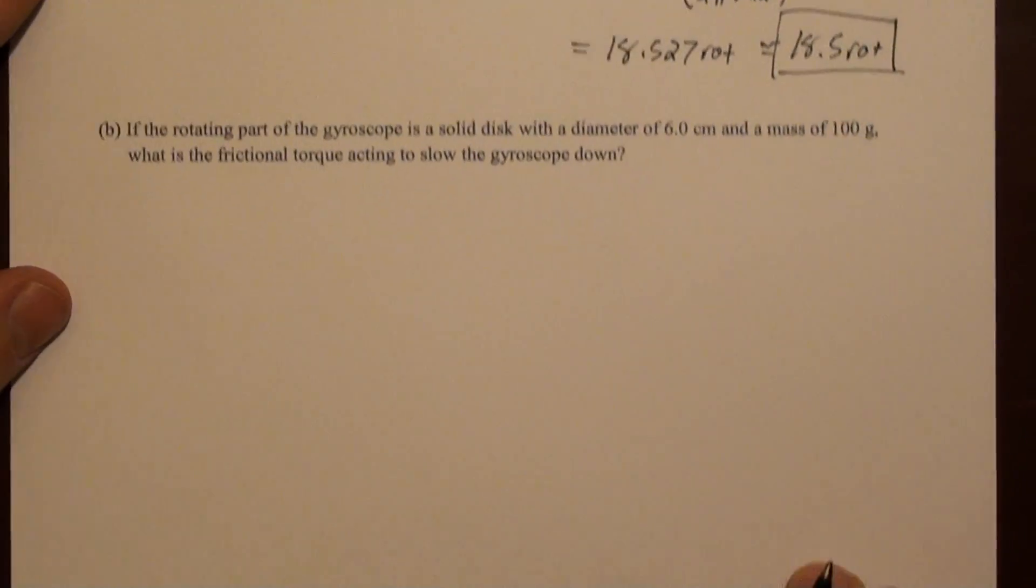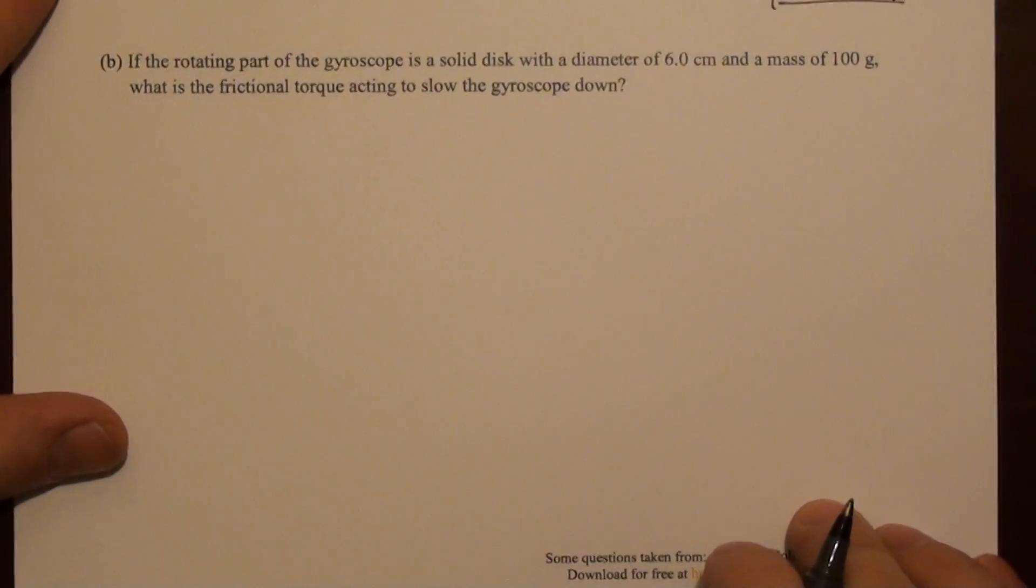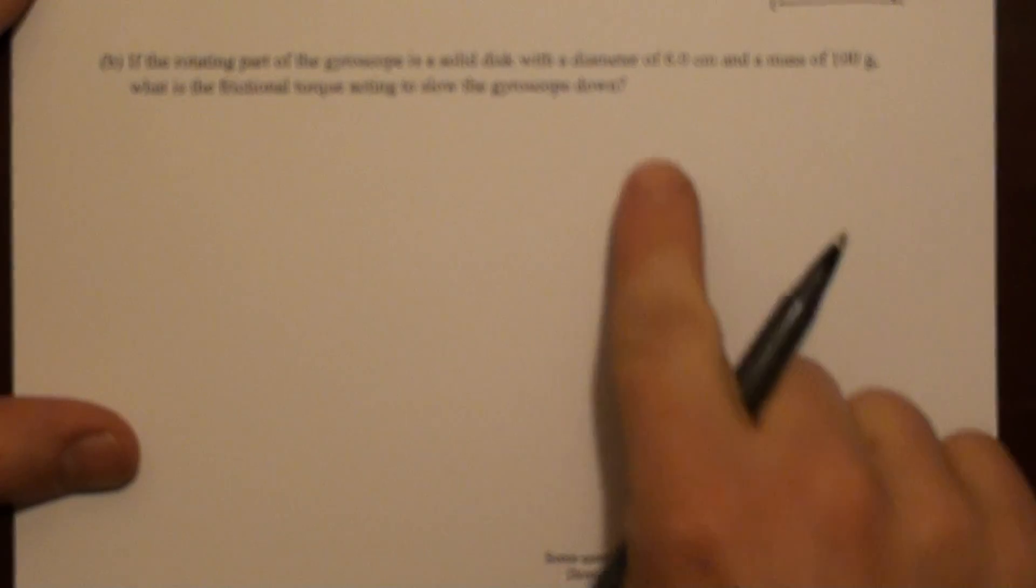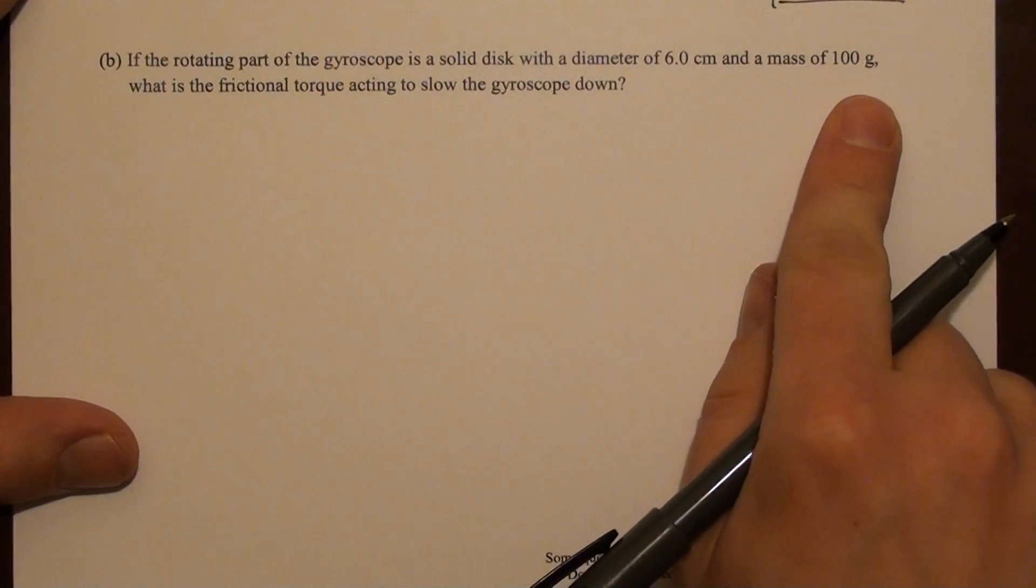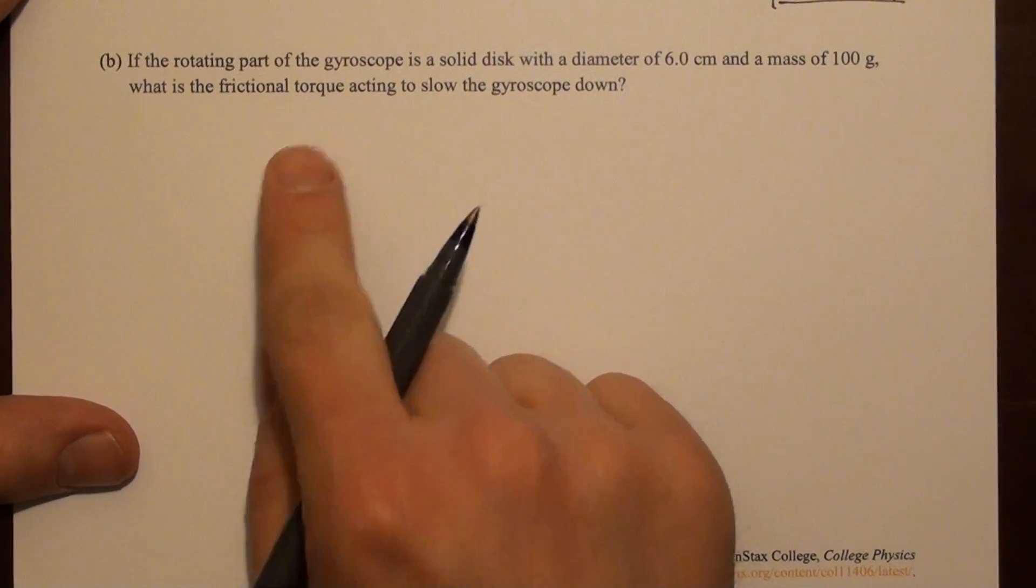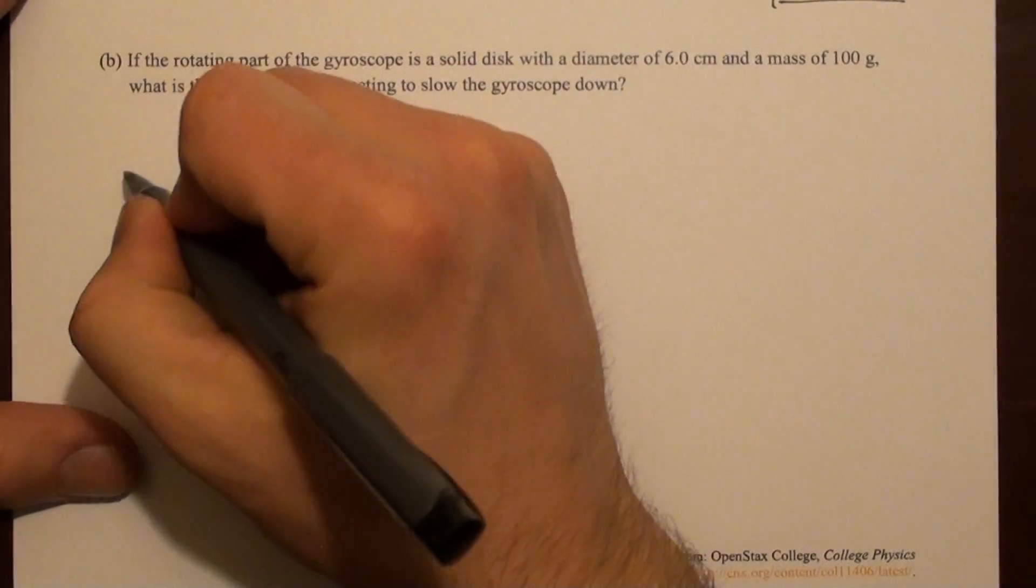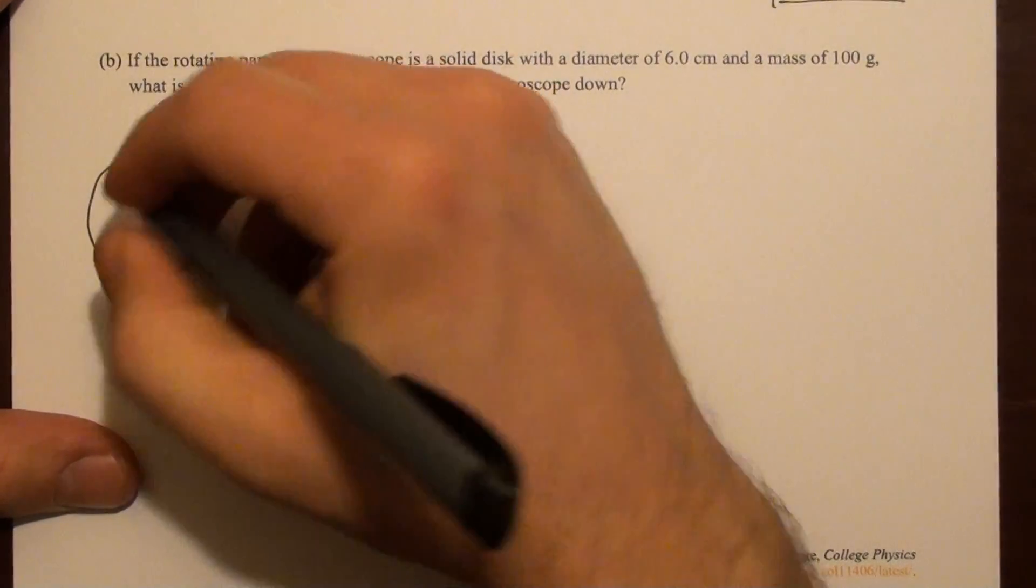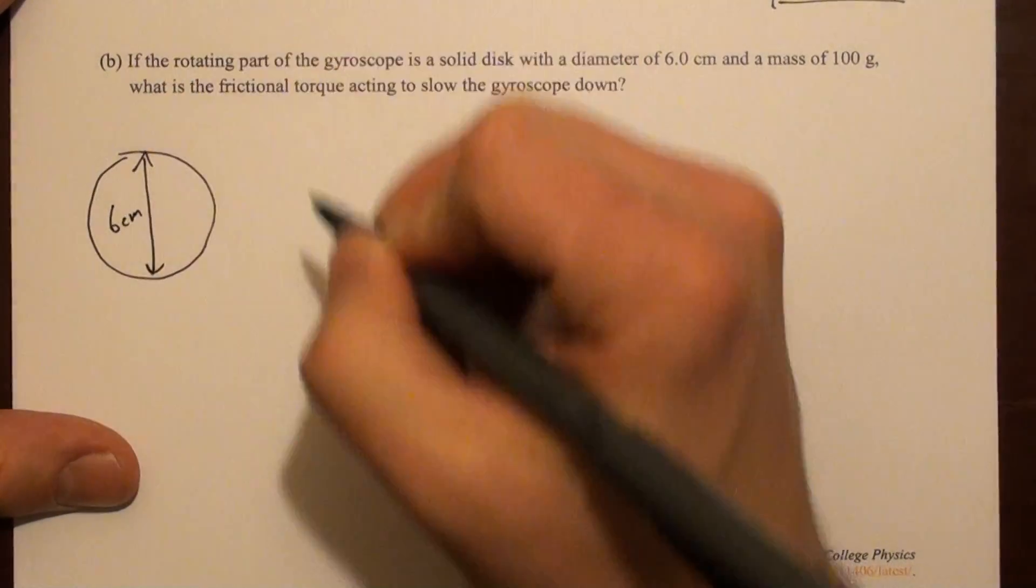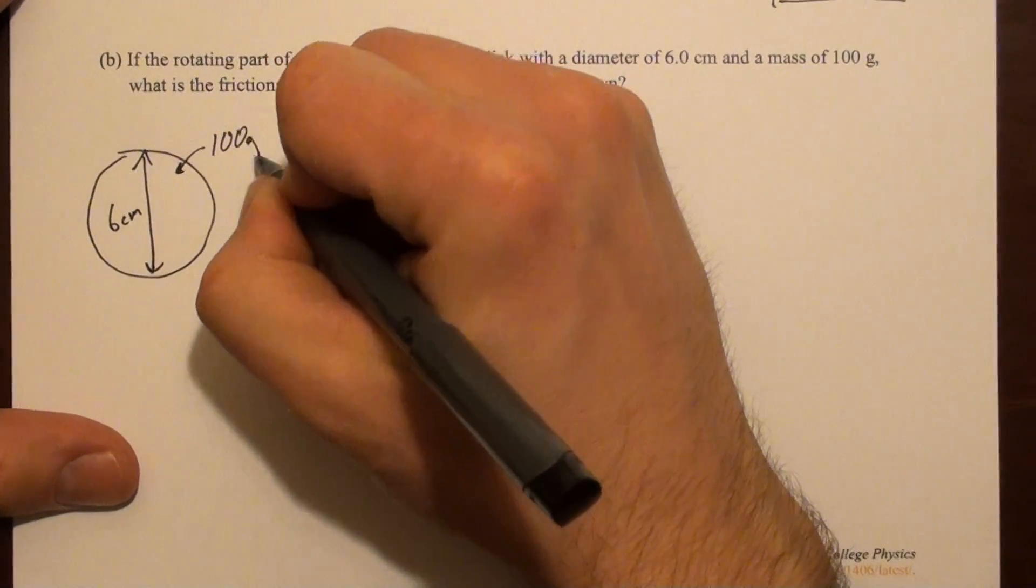Okay, the second part of this problem says, if the rotating part of the gyroscope is a solid disk with a diameter of 6 centimeters and a mass of 100 grams, what frictional torque is slowing down the gyroscope? So, we'll draw it again. And maybe label those, here's my 6 centimeters, and the mass is 100 grams.